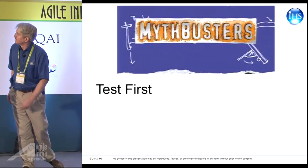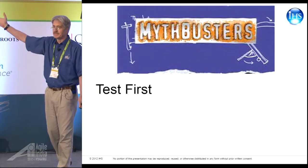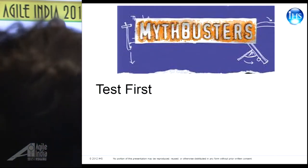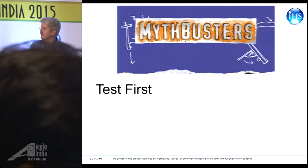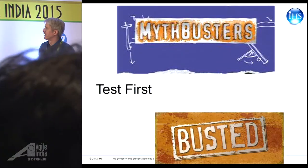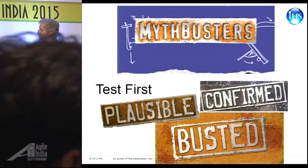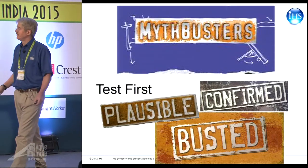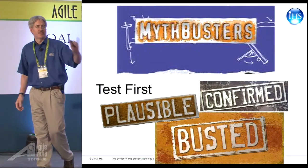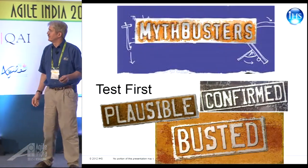So as a good agilist, we're going to start with test first. With the MythBusters, when they get together they have three potential outcomes: either it's busted — the myth is absolutely not true — it's confirmed, or it's plausible, somewhere in between. I'm going to go through ten myths and then go through each one.